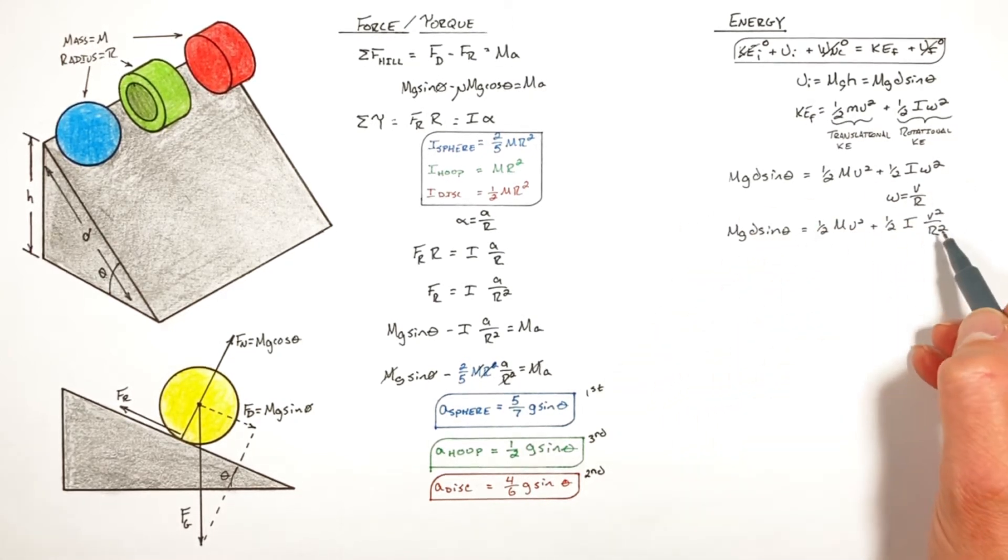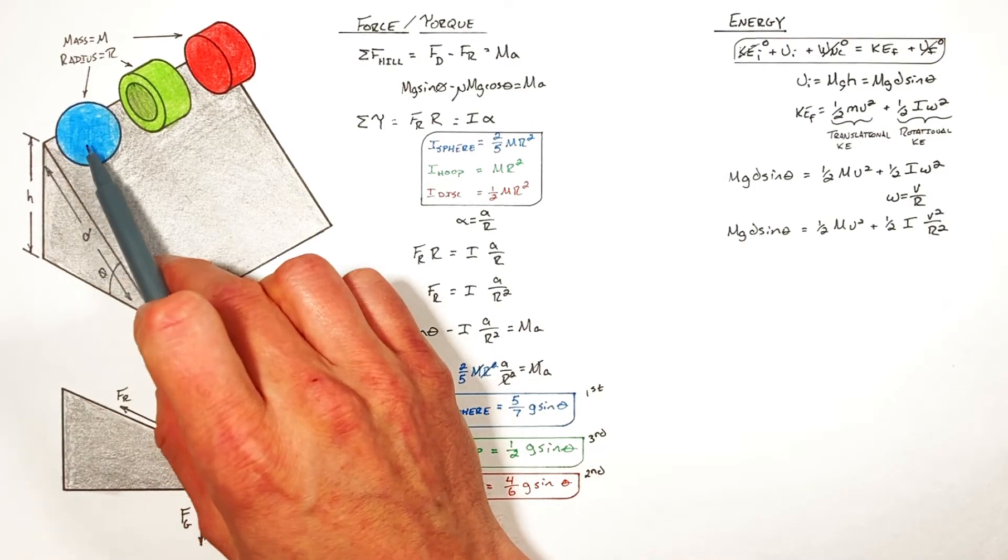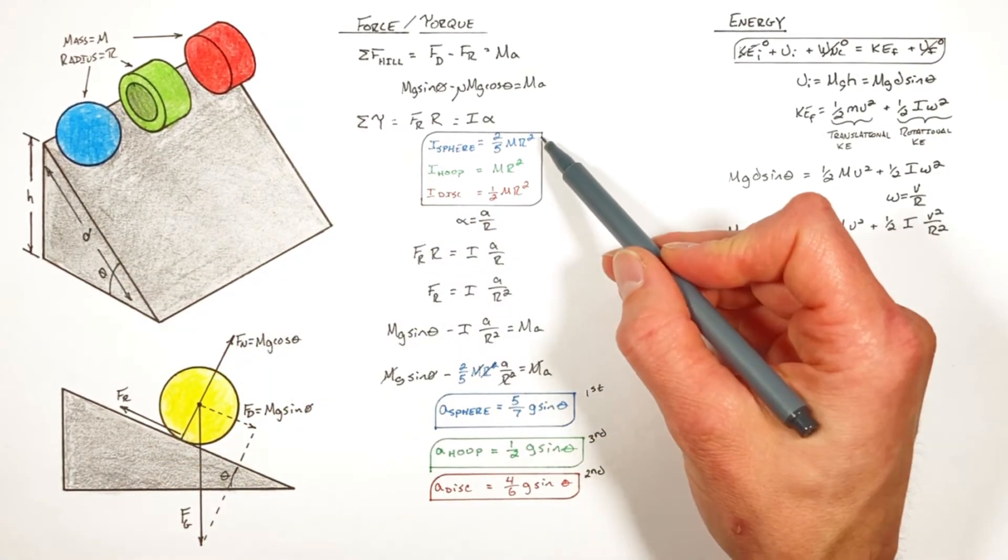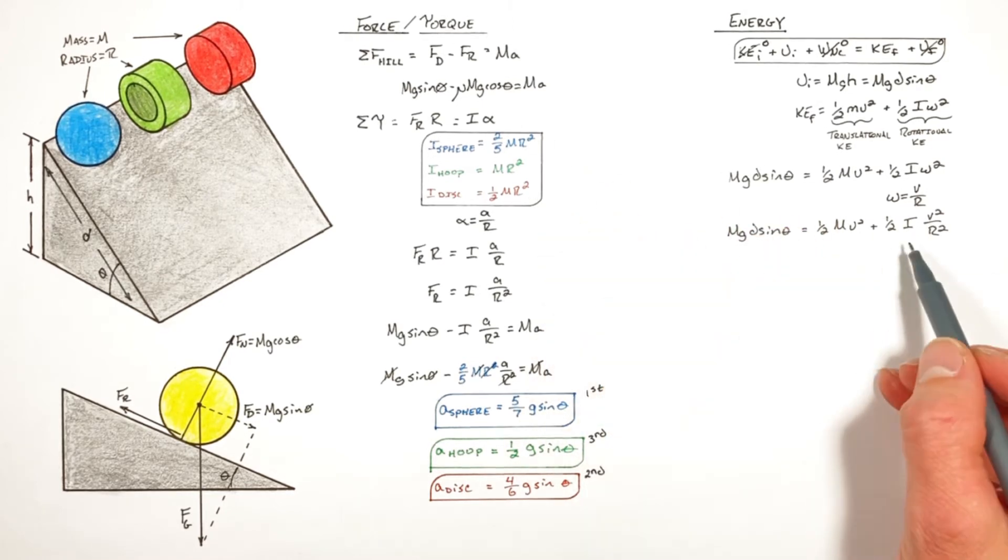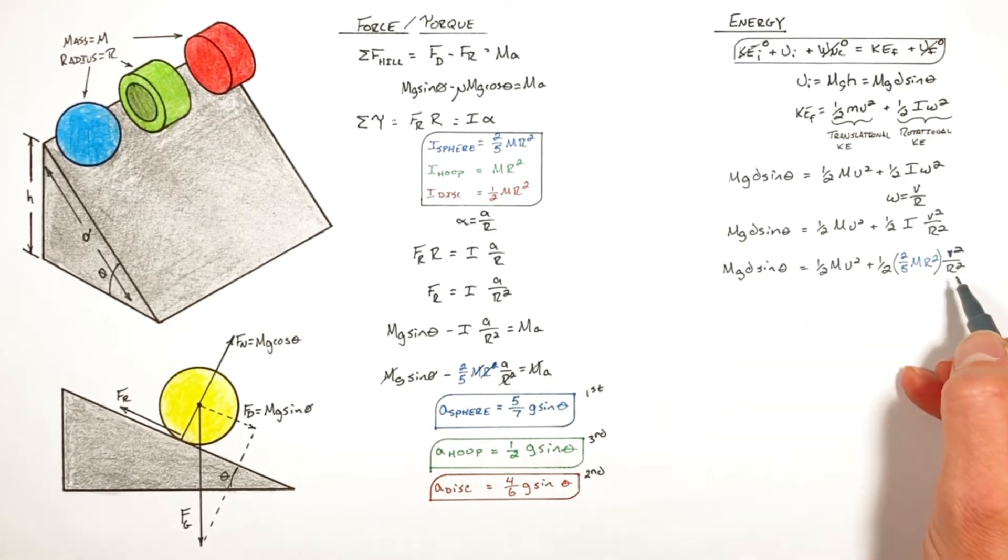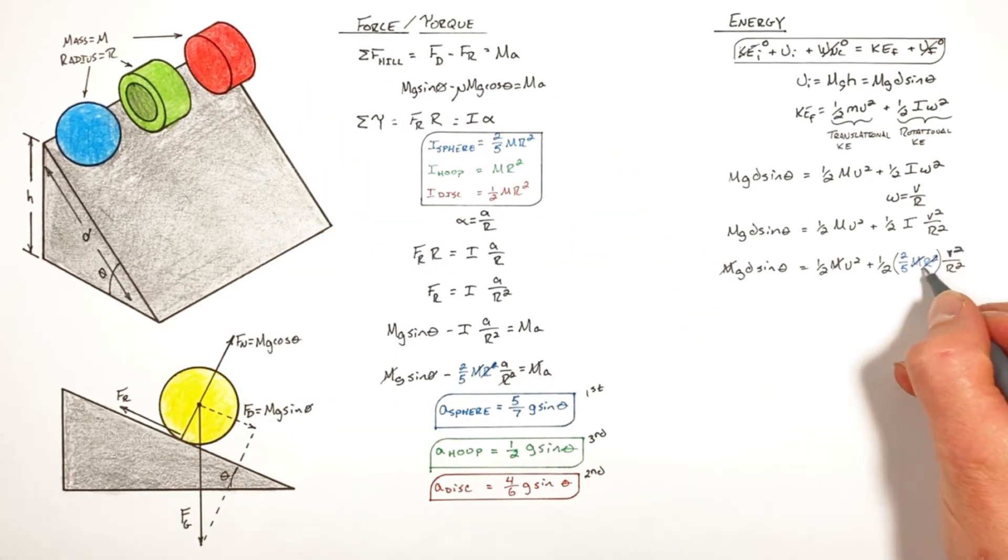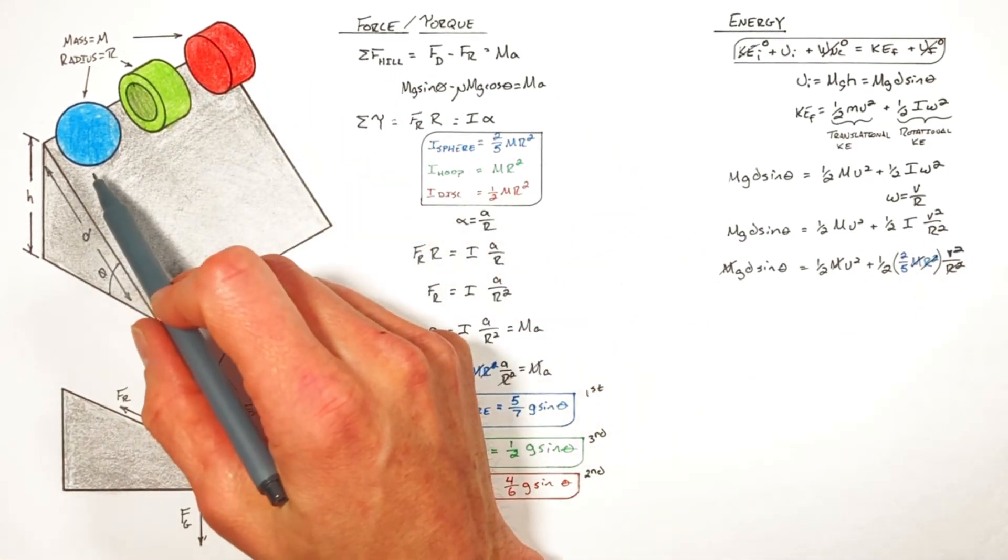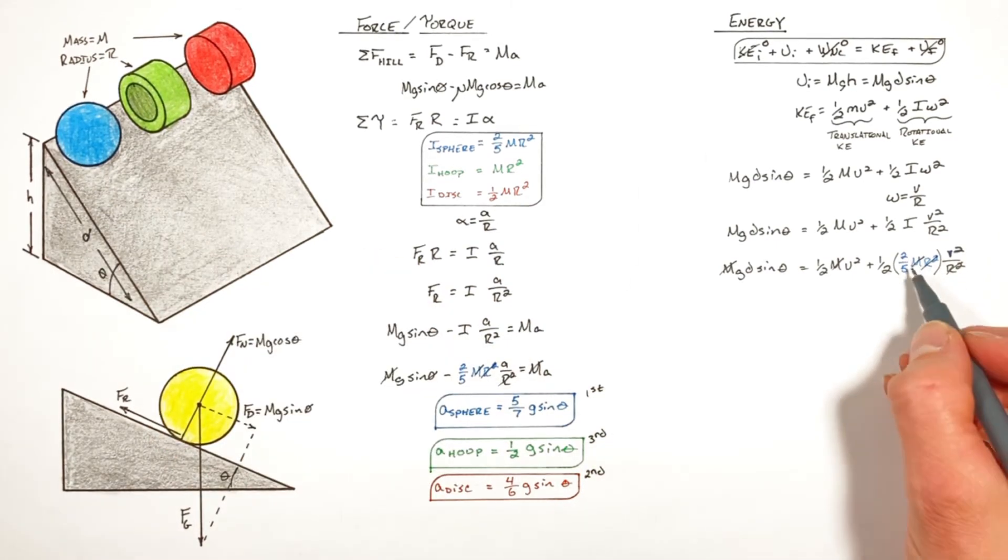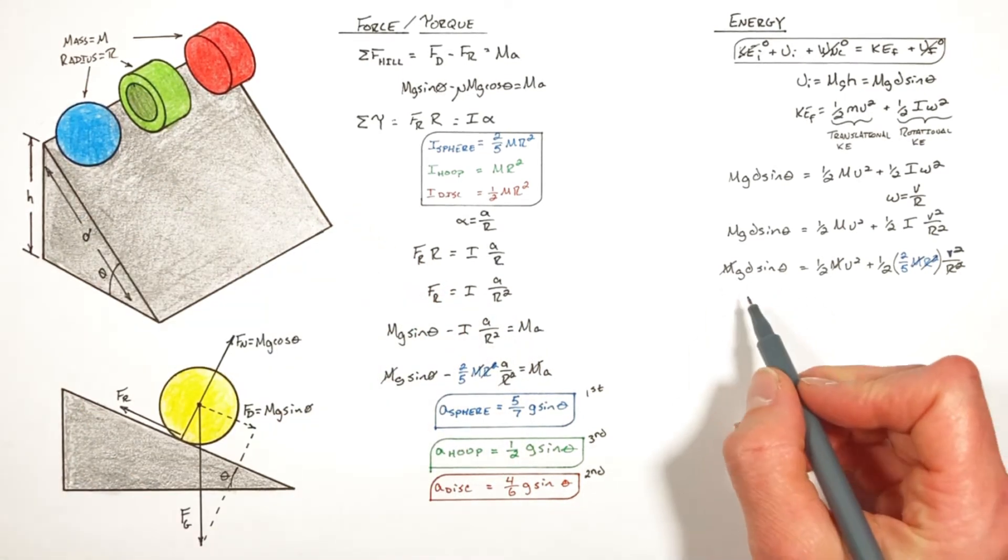We have this equation which relates the velocity at the bottom of the hill to everything else going on in the problem. Now depending on which object we're dealing with here, we're going to sub in different rotational moments of inertia for this term I here. So doing this for a sphere, we wind up with a bit of a cancel party. You'll notice there's a mass term in every term here, which means the mass of these objects is completely irrelevant. Additionally, the radius of these objects cancels out, and we're left with for our sphere just this two fifths hanging out, telling us it's only the shape of the sphere that matters.